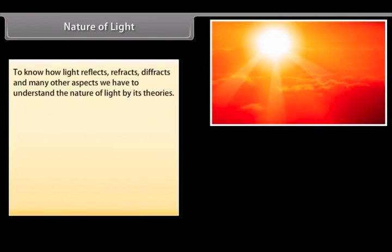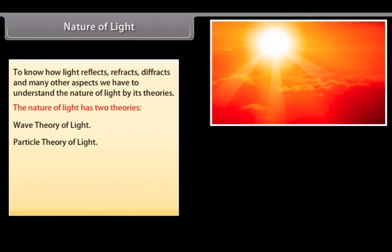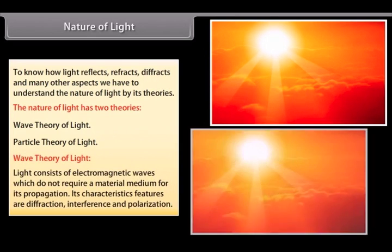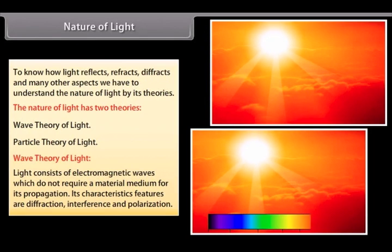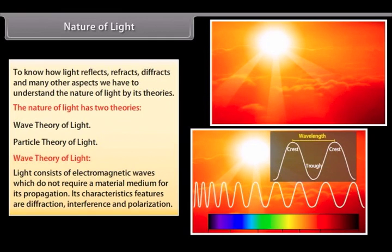Nature of light. To know how light reflects, refracts, diffracts and many other aspects, we have to understand the nature of light by its theories. The nature of light has two theories: wave theory of light and particle theory of light. Wave theory of light: light consists of electromagnetic waves which do not require a material medium for propagation. Its characteristic features are diffraction, interference, and polarization.